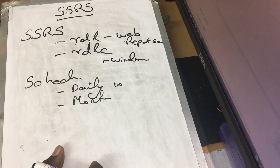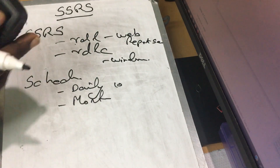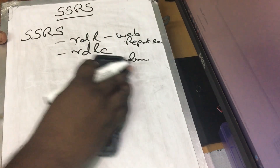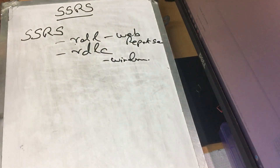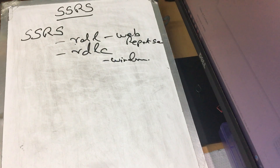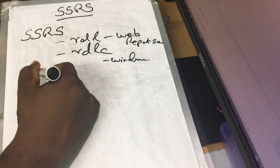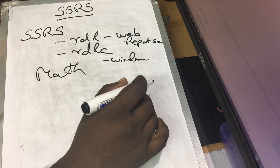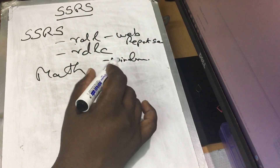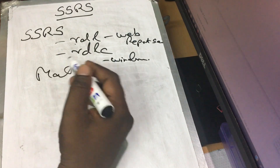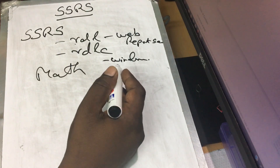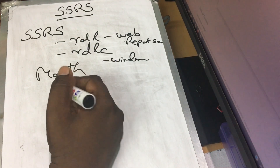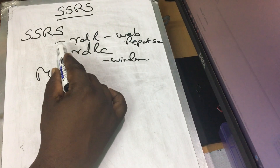One advantage of SSRS is that you can use all the max and average math functions in SSRS. If you want to use any other function, you can use C-Sharp code, convert it to a DLL, and call it in SSRS.